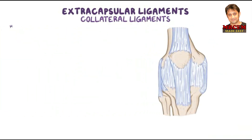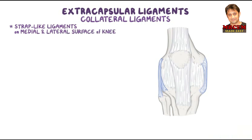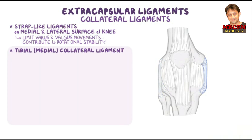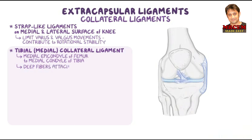The collateral ligaments are two strap-like ligaments on the medial and lateral surface of the knee, contributing to knee stability by limiting varus and valgus movements, while also contributing to rotational stability. The tibial collateral ligament is a flat band that extends from the medial epicondyle of the femur to the medial condyle of the tibia, with its deep fibers firmly attached to the medial meniscus at its midpoint.